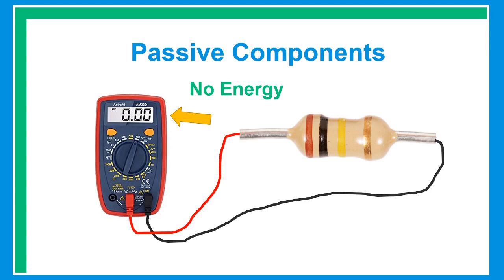Now let's proceed to our passive components. Passive components are electronic components which consume energy in the form of voltage from the source but do not produce or supply energy, and cannot control or limit the flow of electrons or electric current through a circuit. Passive devices are the main components used in electronics, such as resistors, inductors, capacitors, and transformers, which together are required to build any electrical or electronic circuit.